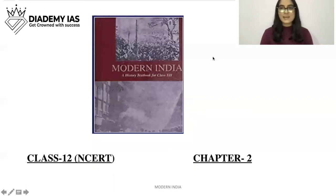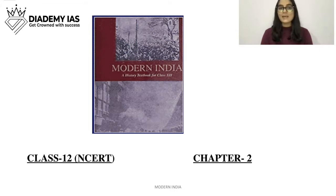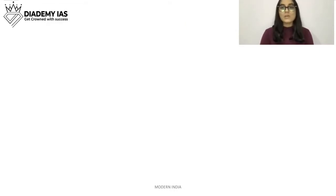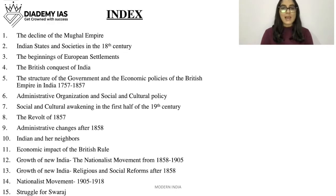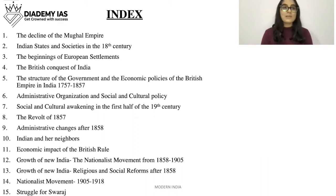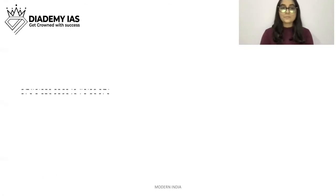Hello everyone, this class is presented by Dyadmi IAS. In this class we will be covering Chapter 2 of Class 11 NCRT Modern India by Bipin Chandra. In total there are 15 chapters, and we have already covered Chapter 1 on the decline of the Mughal Empire. Today we will be covering Chapter 2: Indian States and Societies in the 18th Century.